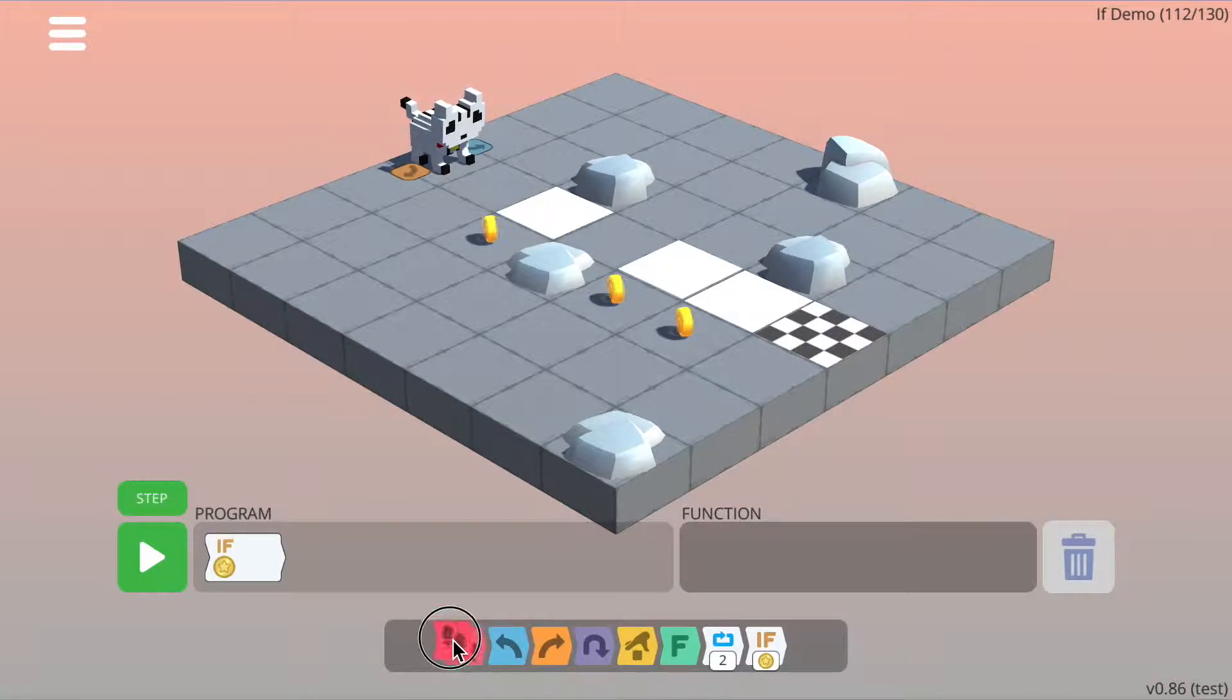Like a loop, you can drag commands into it, but the commands will only be executed if the condition is true. What this means here, for example, is if the cat is on a coin, walk forward and turn left. If the cat isn't on a coin, it will ignore these commands.